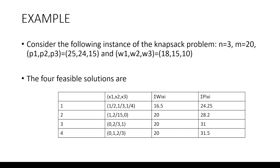Let us see an example. Consider the following instance of a knapsack problem. Given that n equals 3 and the total weight m equals 20, the profits are given as 25, 24, and 15 respectively. The weights are given as 18, 15, and 10.